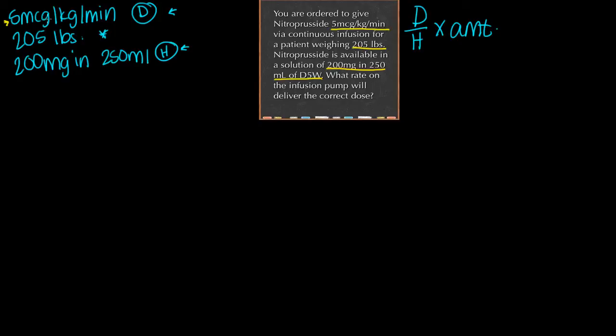Our desired - 5 mcg per kg per minute - means for every kilogram the patient weighs, I need to give 5 mcg every minute. Because this is in kilos, we need to convert the patient's weight from pounds to kilos. To convert, we do 205 divided by 2.2, which gives us 93.18. We can round that to 93.2, and here's our weight in kilograms. If you were going from kilograms to pounds, you would multiply by 2.2.